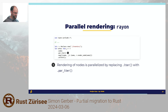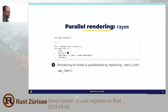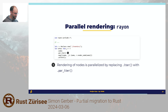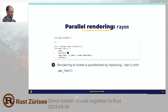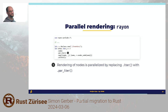Once we had this running single-threaded, we knew rendering happens node by node with no dependencies between nodes. So I just added Rayon to the dependencies, imported the prelude, and replaced iter with par_iter. There you have it.